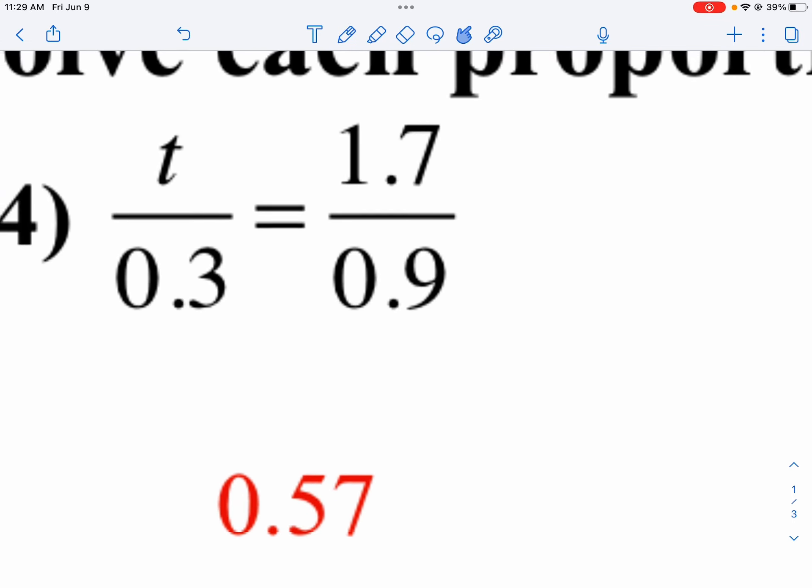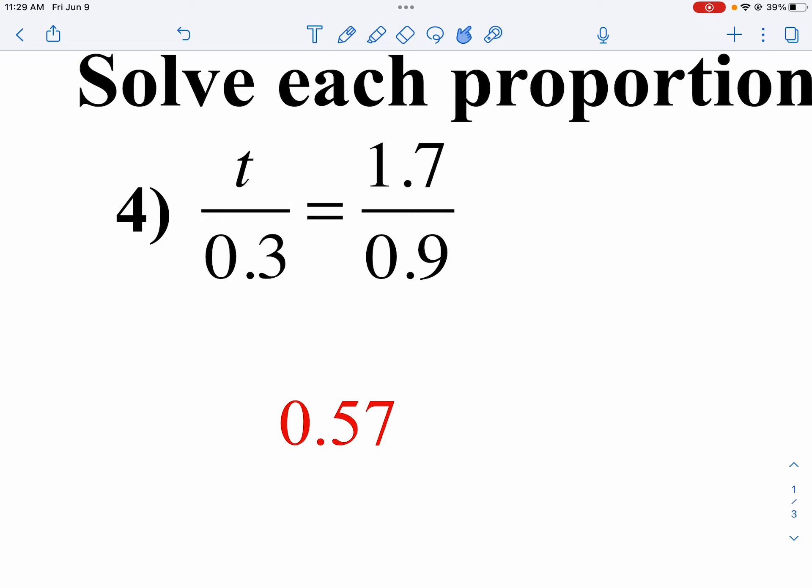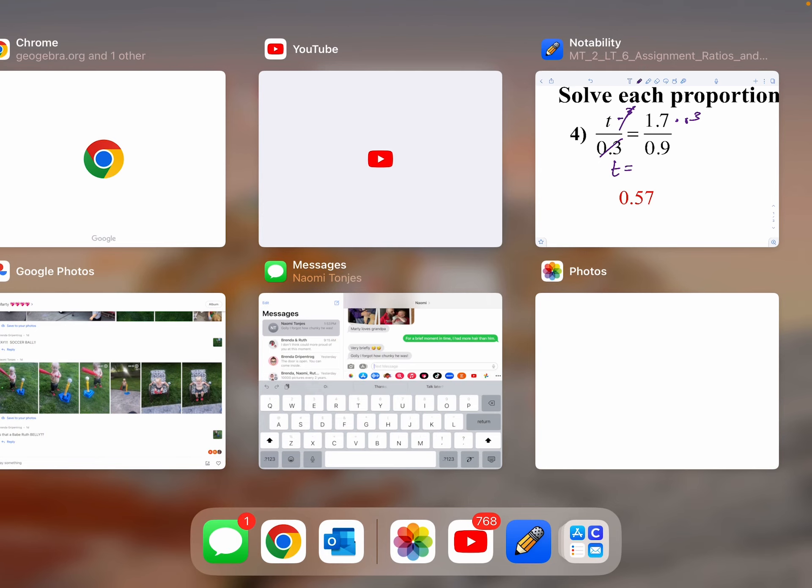Okay, on number 4. Remember, when you solve a proportion, it's just like solving an equation. I want to get T by itself. So I'm dividing by 0.3, so I'm going to multiply both sides by 0.3. Here my 0.3 is reduced, so I get T equals. And then since I've got decimals, I'm just going to multiply them out. I'm going to take 1.7 times 0.3 and divide it by 0.9.